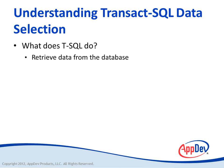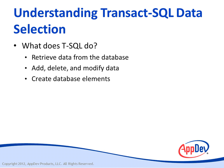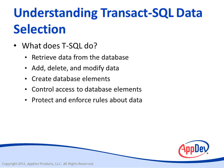By definition, a relational database query language is able to retrieve data from the database. After all, that's what query means. But in addition to querying, it also needs to provide various other capabilities. It needs to be able to add, delete, and modify data in the database. It needs to be able to create database elements, including databases, tables, indexes, and other elements. It needs to control access to database elements, and protect and enforce rules about the data.